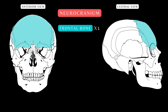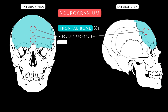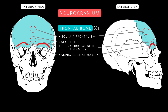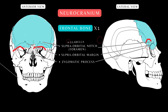Here's the frontal bone, located at the antero-superior portion of the skull — it forms the forehead. Some of its important features include: the squama frontalis, the squamous part that forms the cranial cavity; the glabella, a flat depression between the brow line; the supraorbital notch, which sometimes presents as a foramen containing the supraorbital nerve; the supraorbital margin, which forms the upper boundary of the orbit; and the zygomatic process, an extension of the frontal bone that articulates with the zygomatic bone of the facial skeleton.